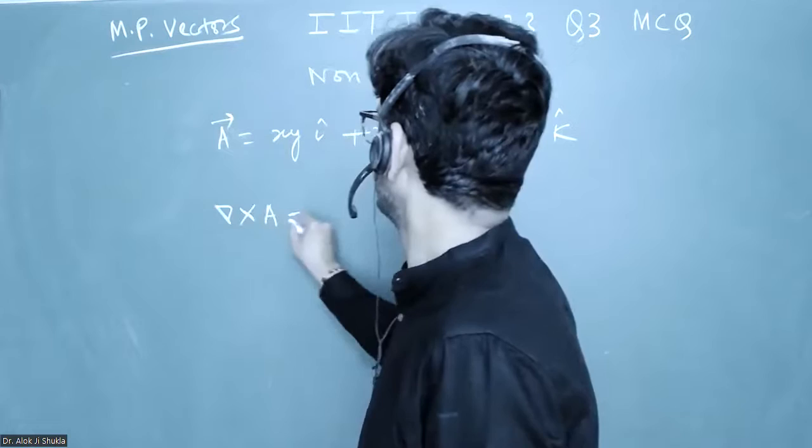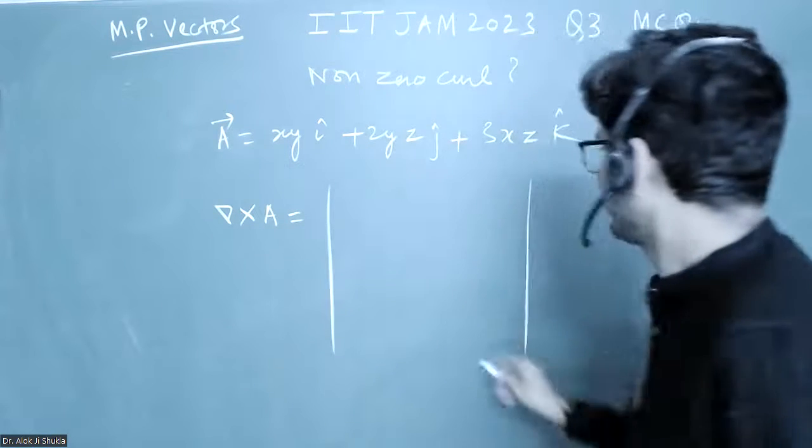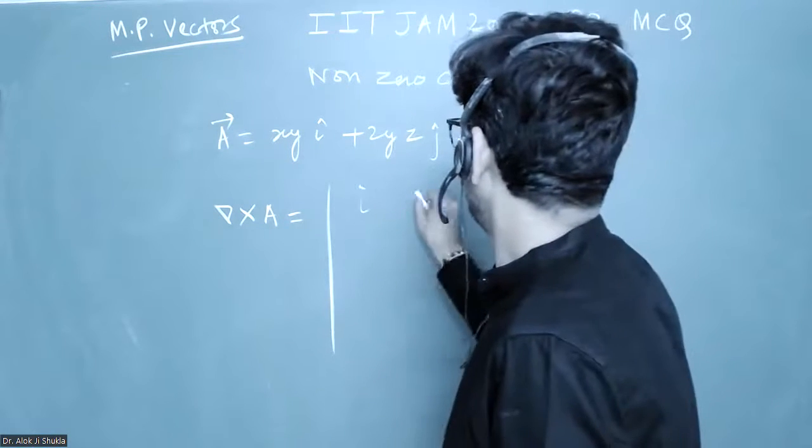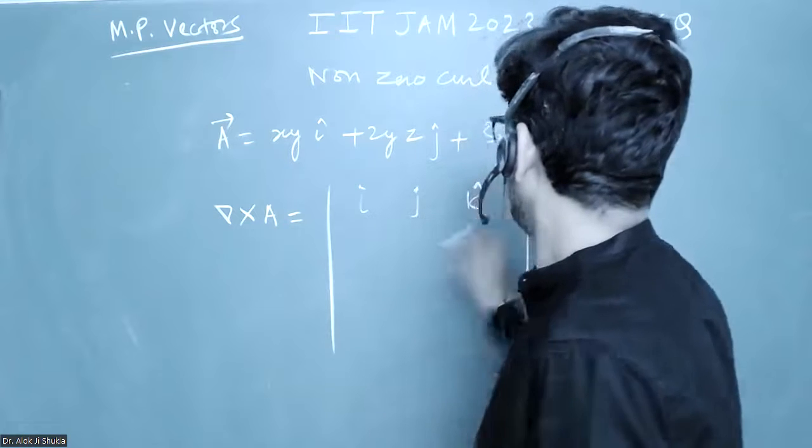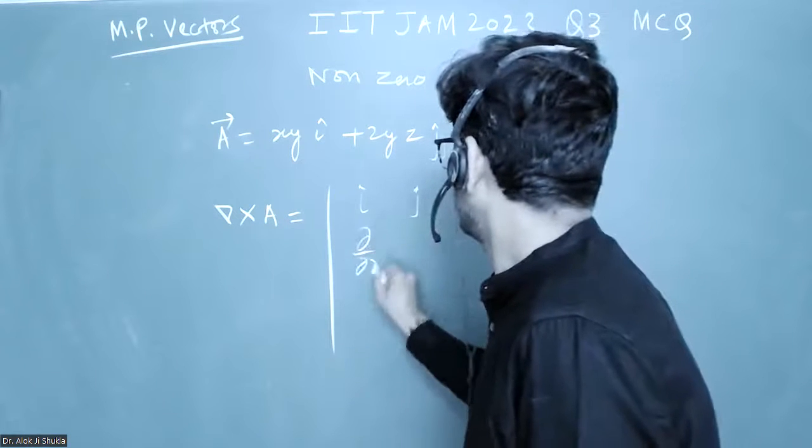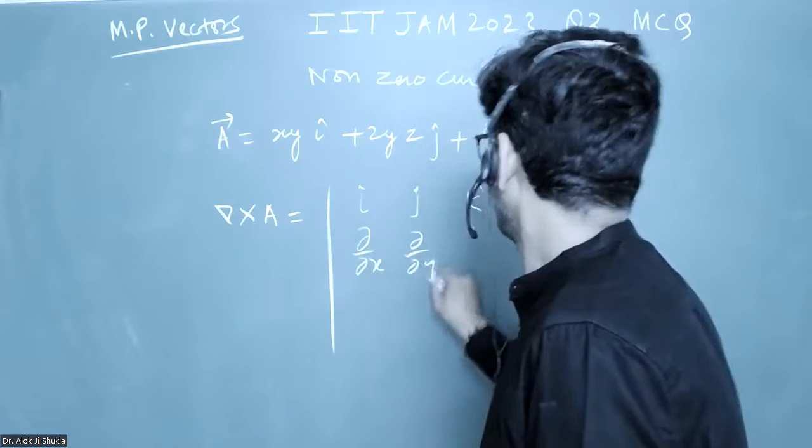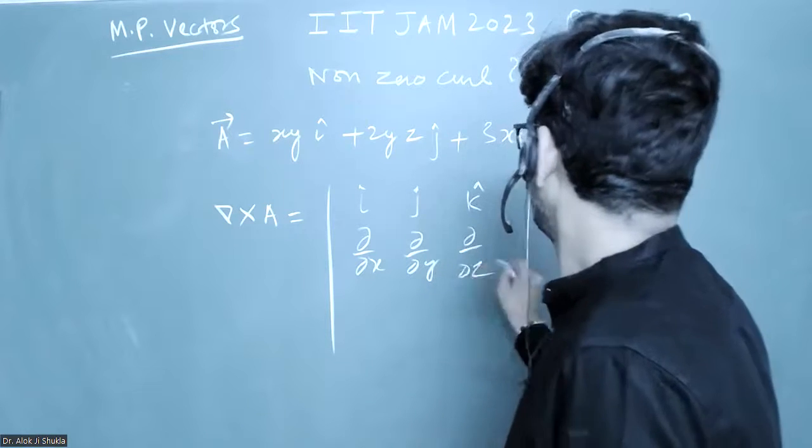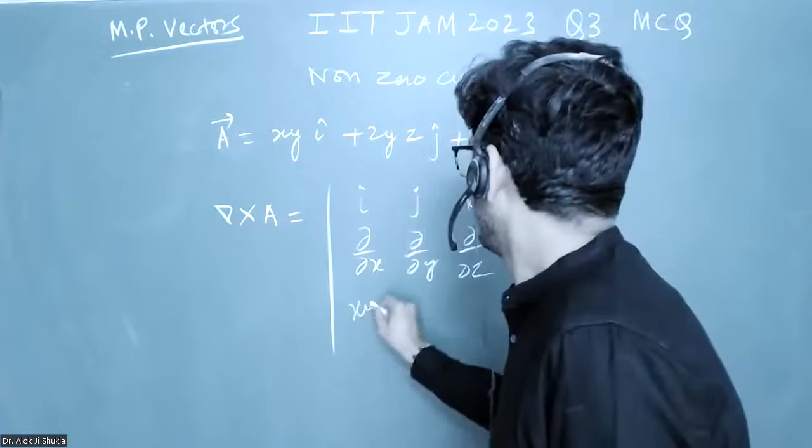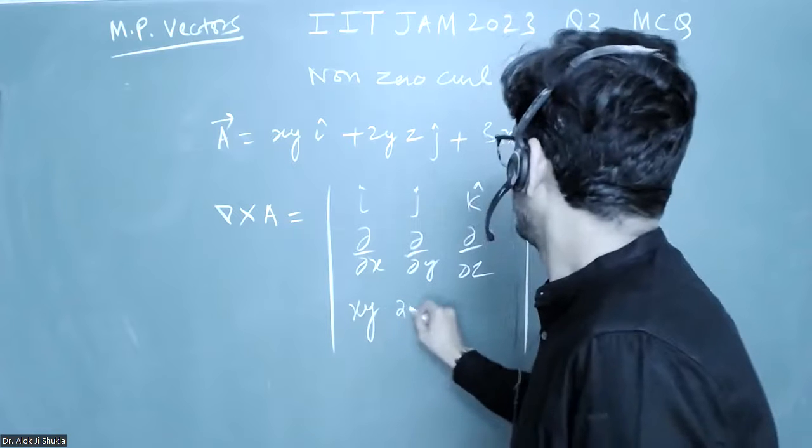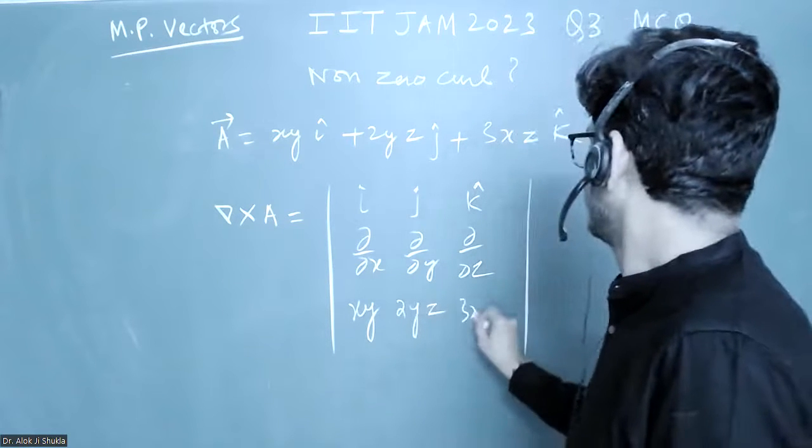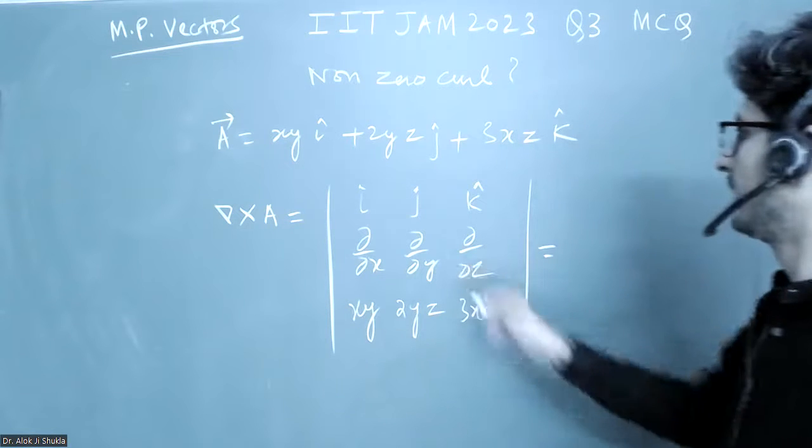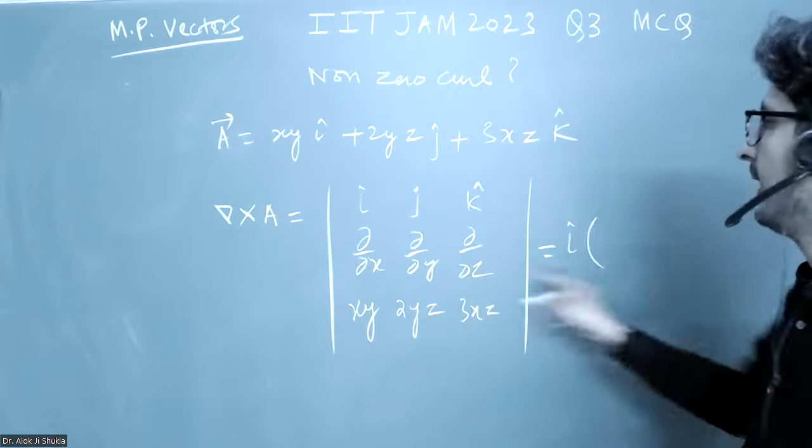So that will be given by i cap, j cap, k cap, del by del x, del by del y, del by del z, and this is xy, 2yz, and 3xz. Let us check this.